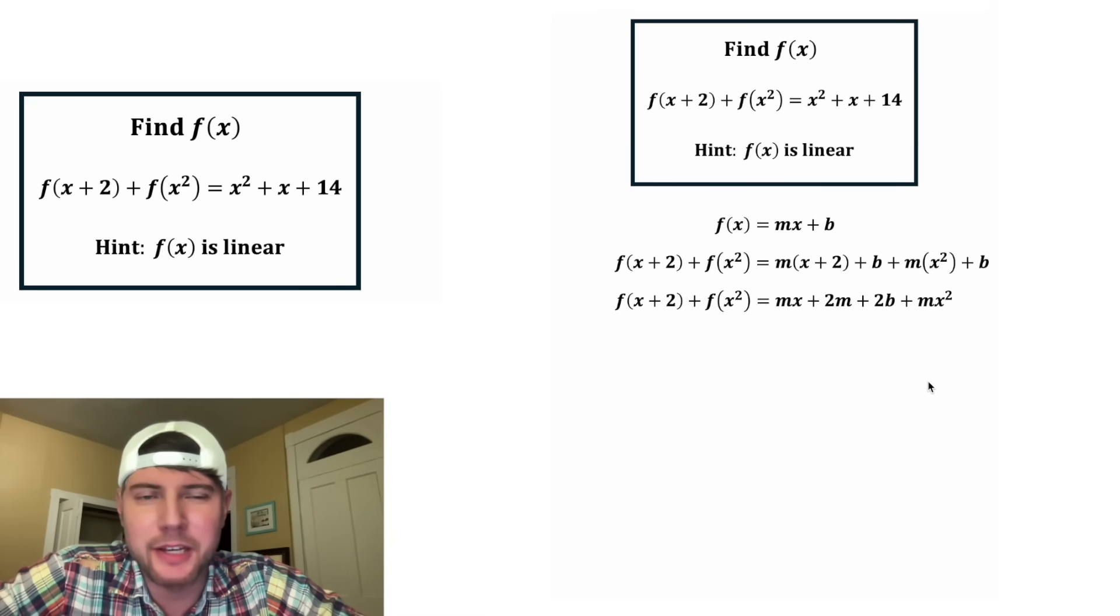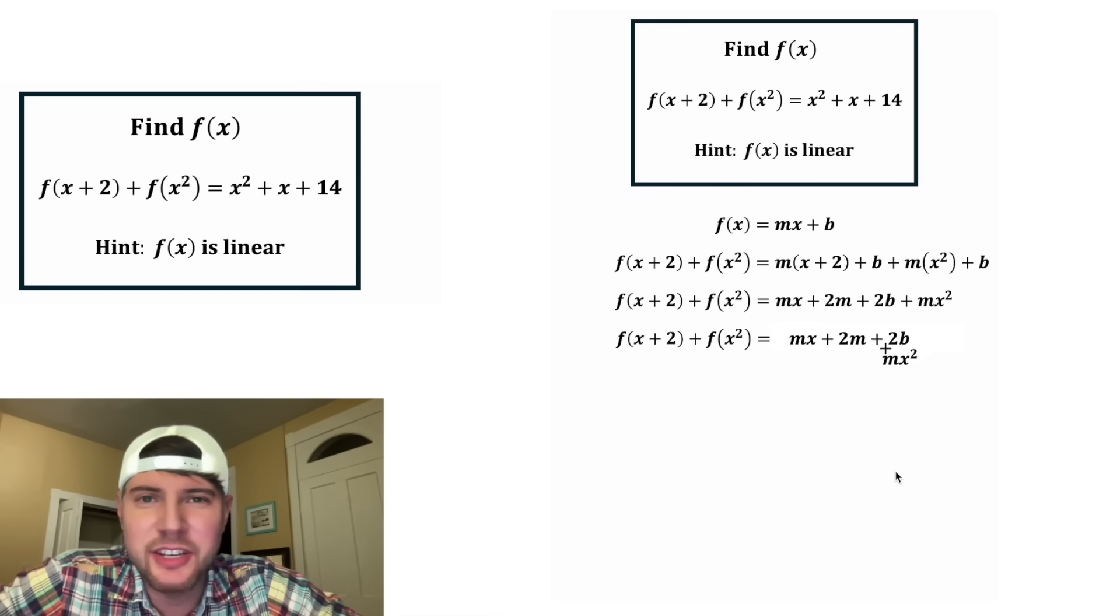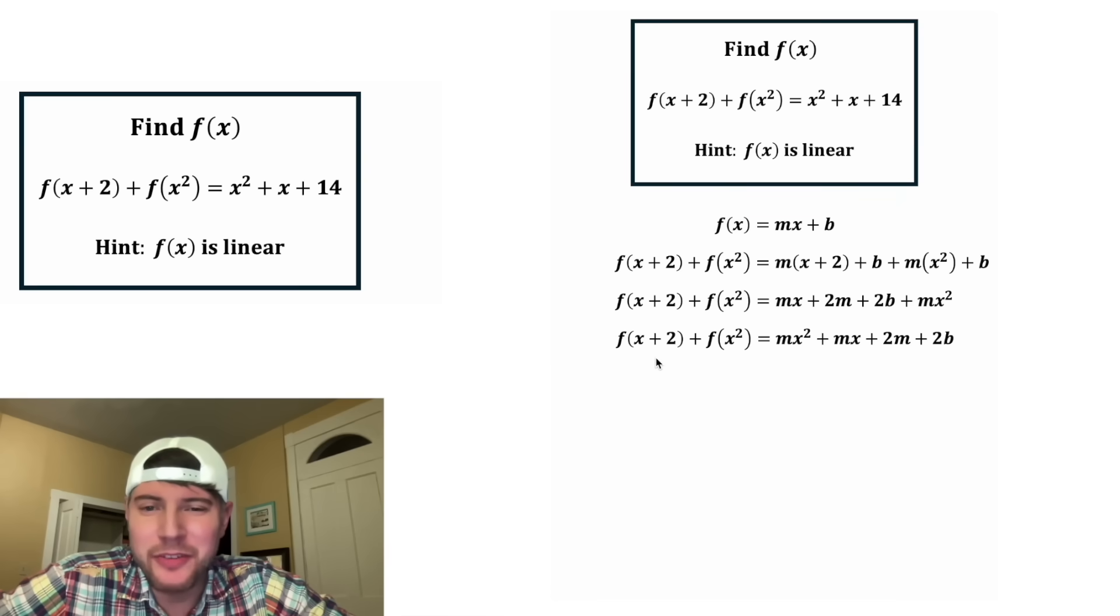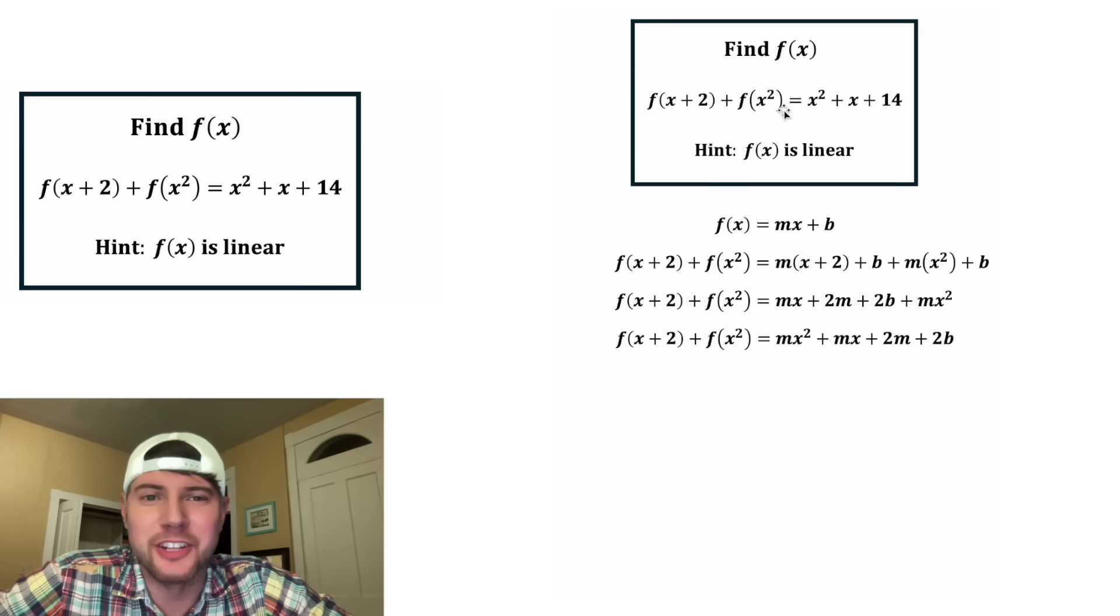Let's copy down the mx squared. And then we can rearrange these in descending order: the x squared term, the x term, and the constants. So now we know f of x plus 2 plus f of x squared is equal to all this. But we also know that f of x plus 2 plus f of x squared is equal to this.